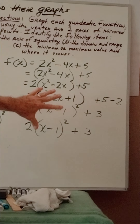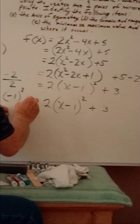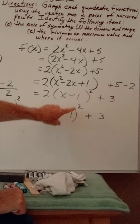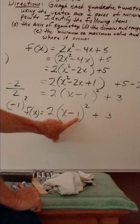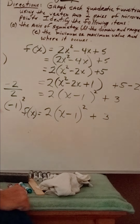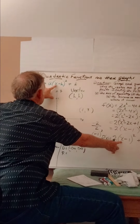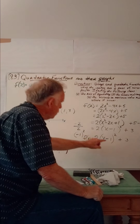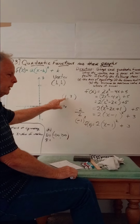We now have our new vertex form: f of x equals 2 times the quantity of x minus 1, squared, plus 3. Before we did any of this, recall we found the vertex was 1, 3. Looking at this new form, h is 1 and k is 3 — which matches the vertex exactly.